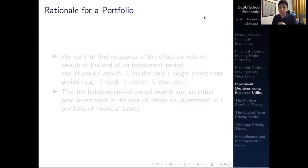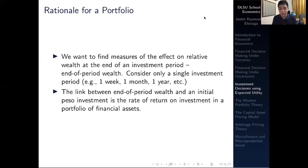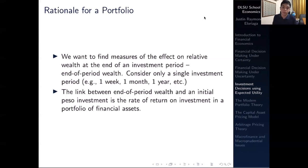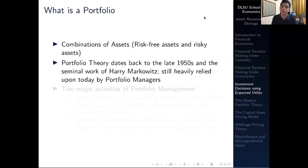This is the rationale for our portfolio. We want to find measures of the effect on relative wealth at the end of an investment period — i.e., end-of-period wealth. For a single-period investment, the link between end-of-period wealth and the initial monetary investment is the rate of return on the portfolio. A portfolio is a combination of risk-free and risky assets, each with a rate of return. This theory, studied by Harry Markowitz in the 1950s, is still heavily used today.